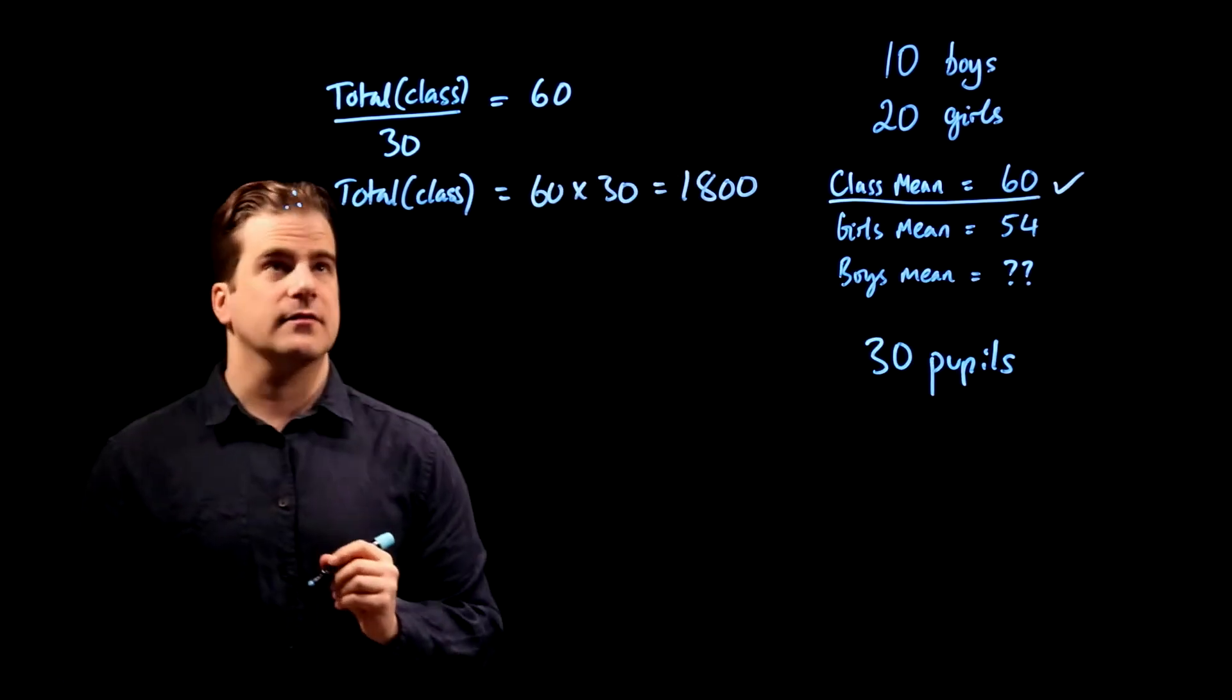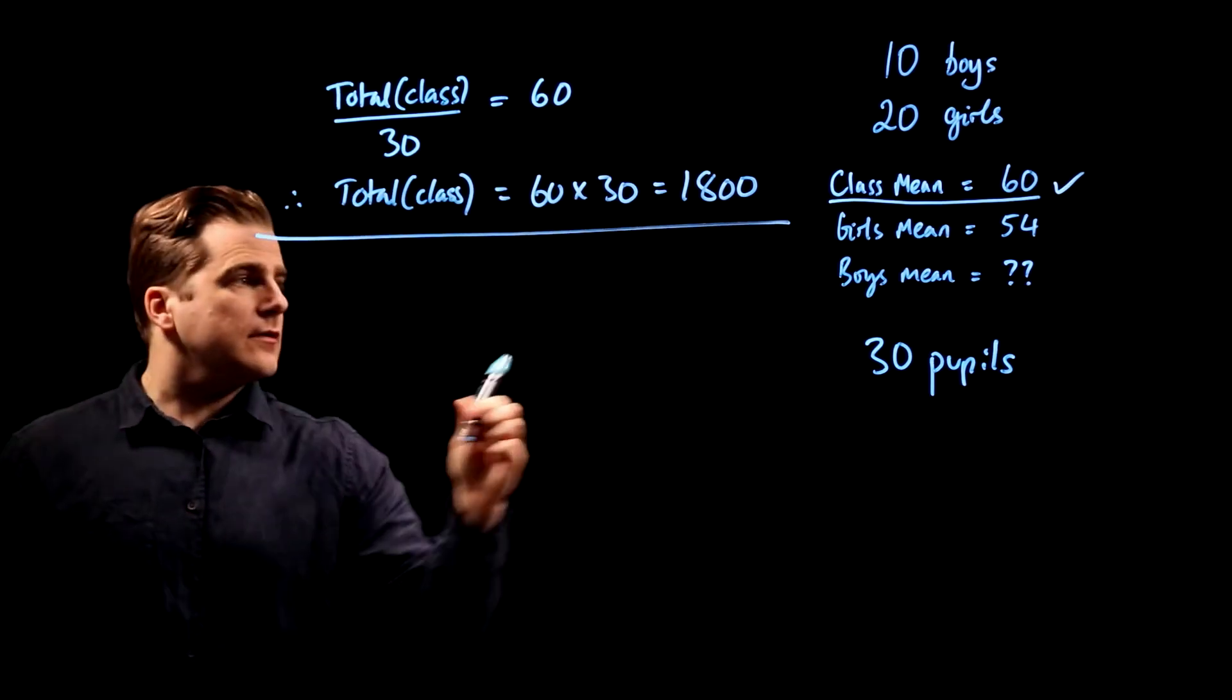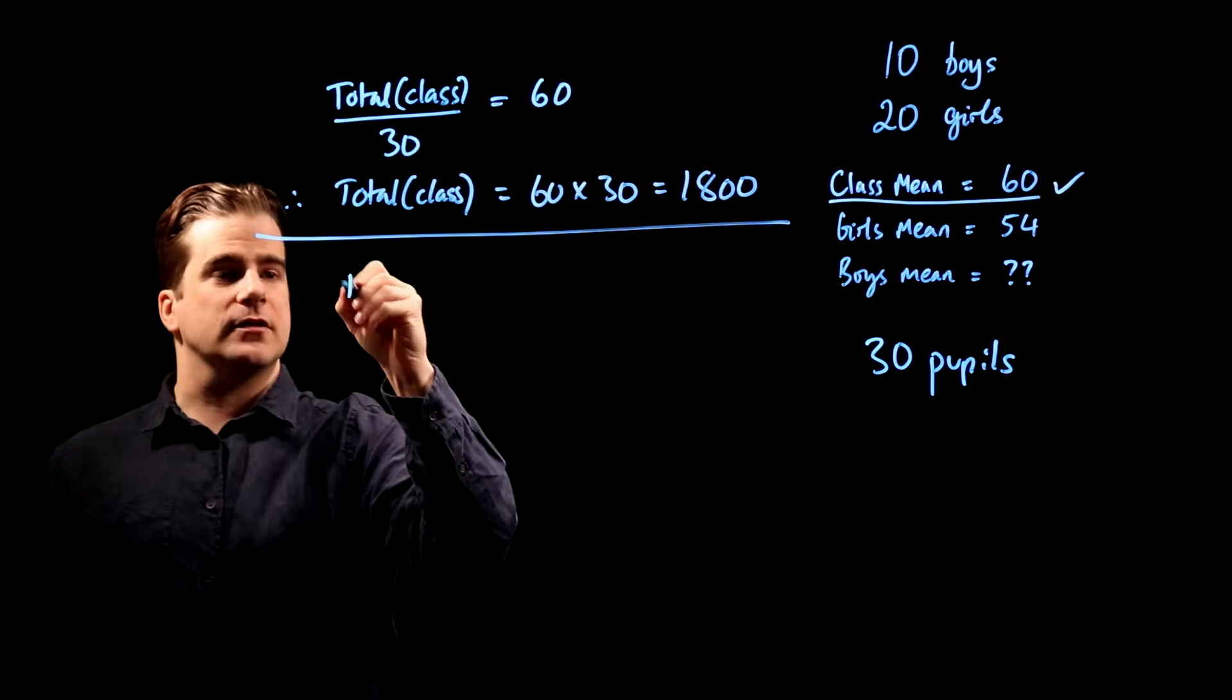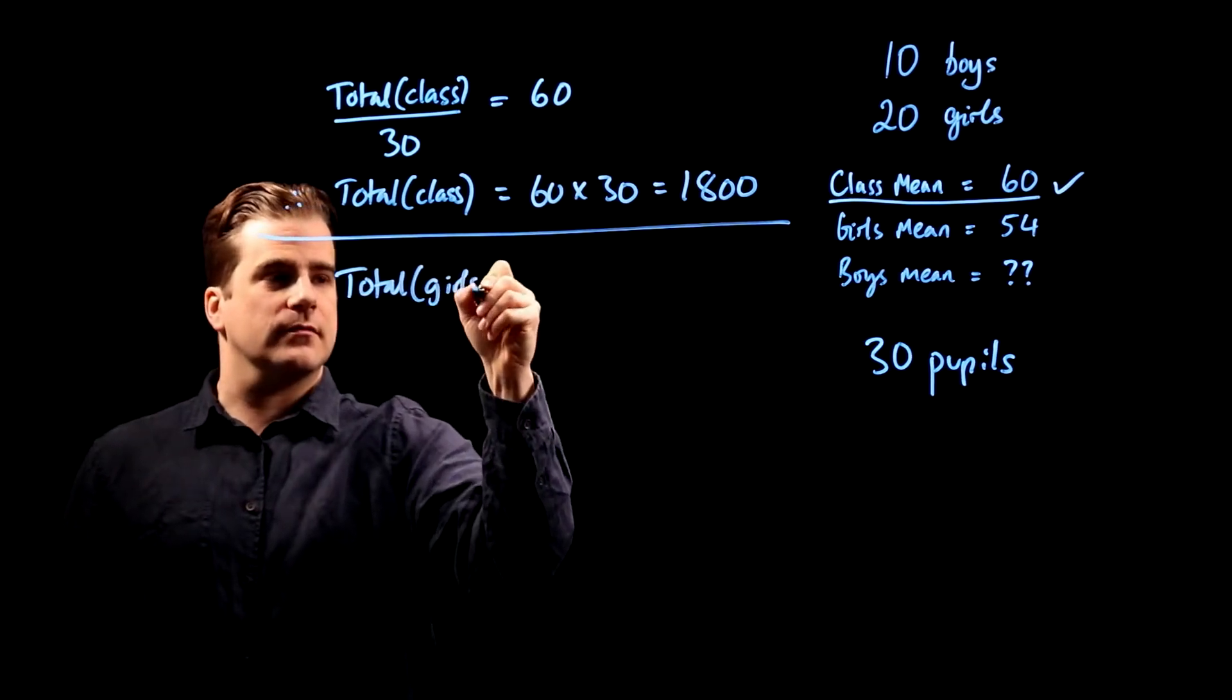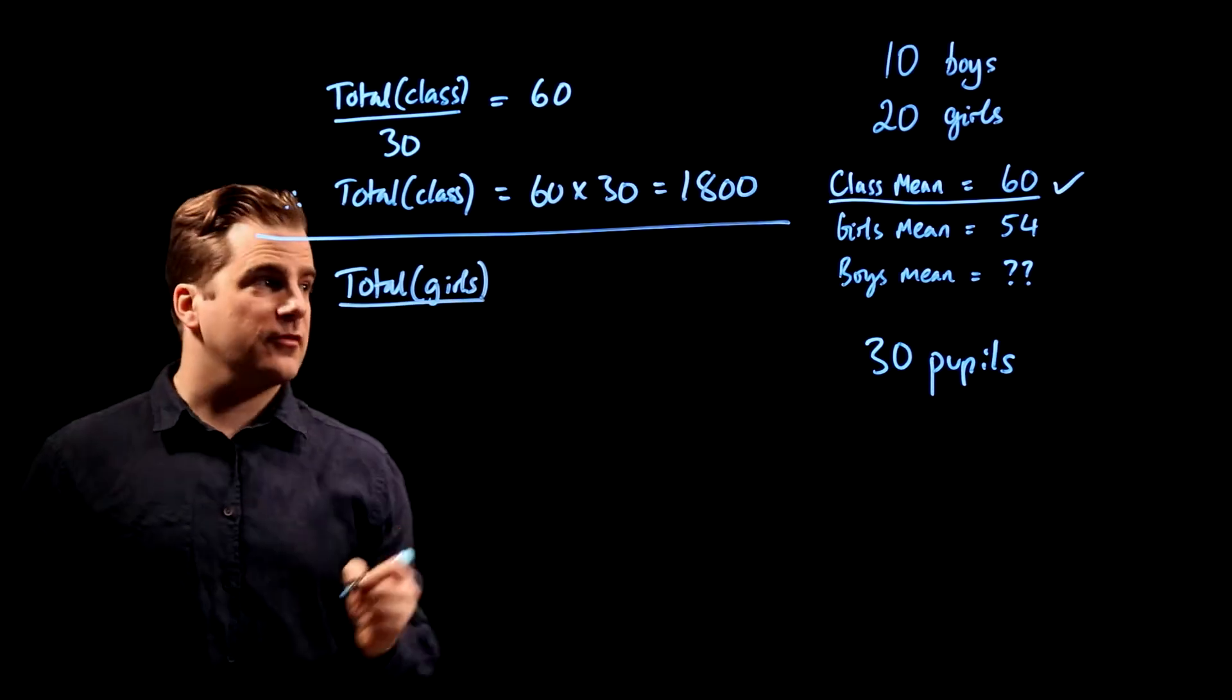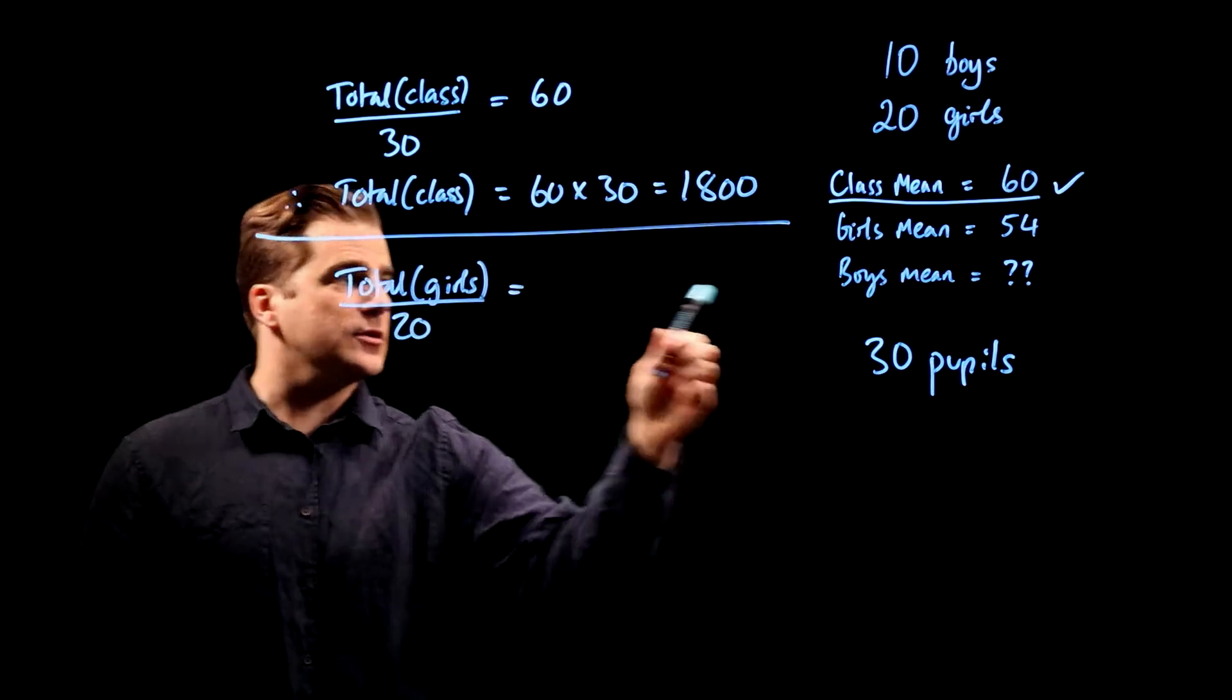We'll do the same for the girls. The girls' mean score is the total score for the girls divided by the number of girls, which is 20, and that equals 54.